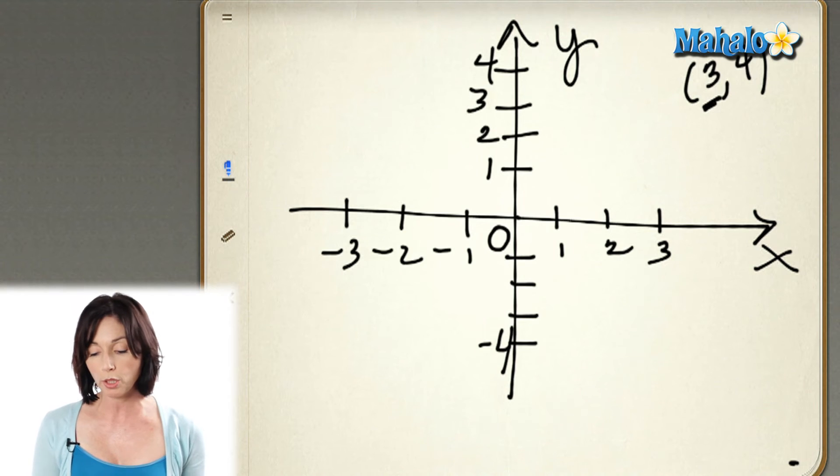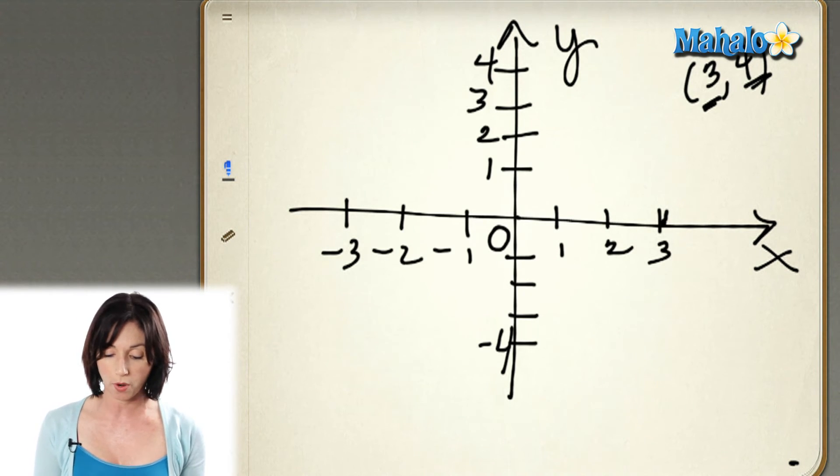And then what we do is we look at the y-coordinate, the 4, and from that point where we are on the x-axis, we move that many points on the y-axis. So we're going to go up 4. So we go 1, 2, 3, 4, and our point, 3, 4, is right up there.